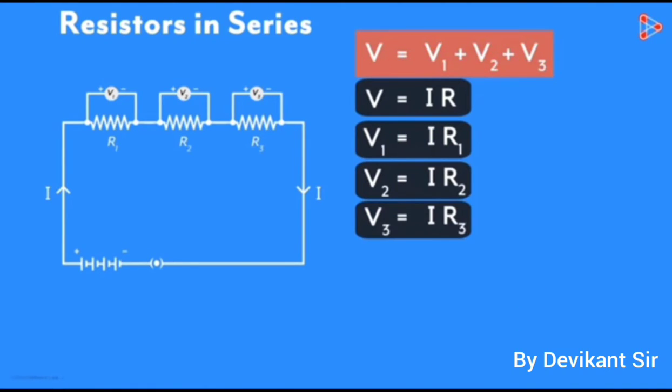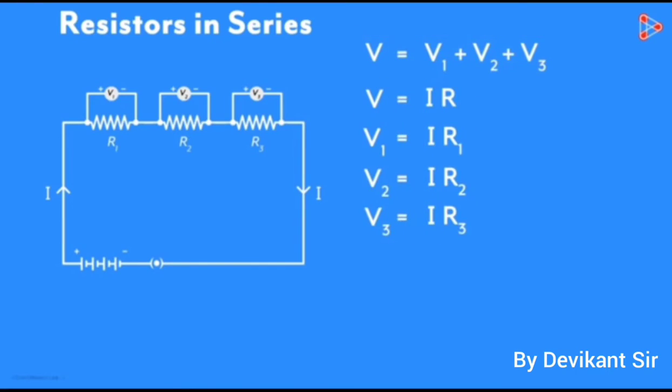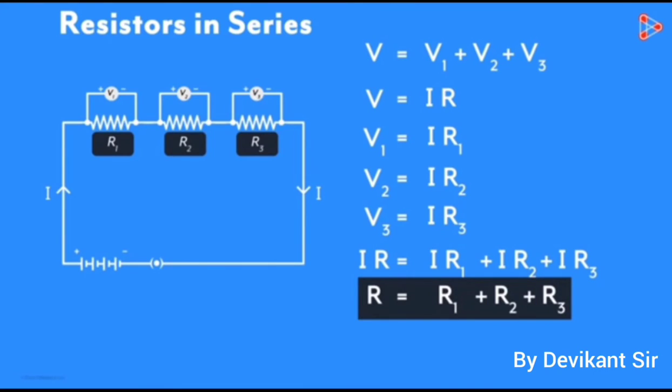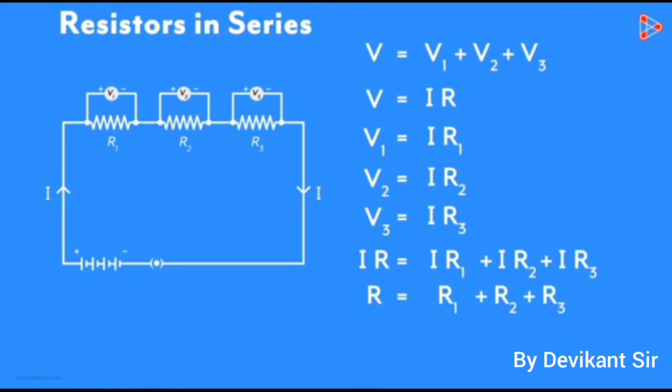Now total voltage V is equal to capital IR which is equal to IR1 plus IR2 plus IR3. Cancelling capital I on both sides we get R equals to R1 plus R2 plus R3. Therefore the equivalent resistance of series combination capital R is equal to R1 plus R2 plus R3.